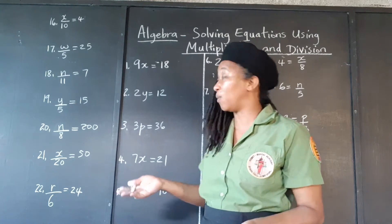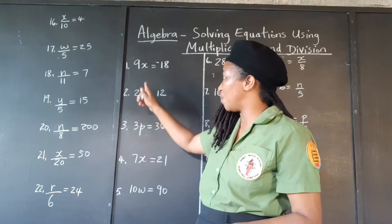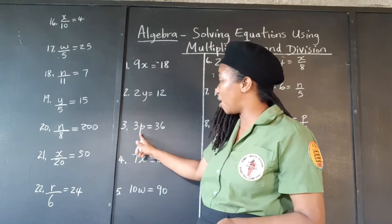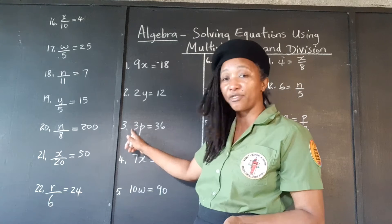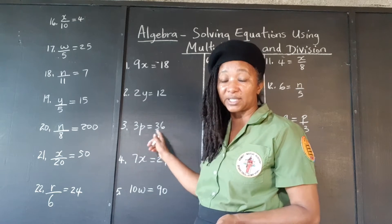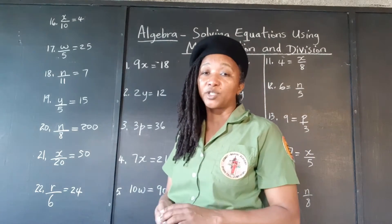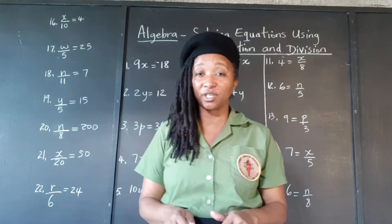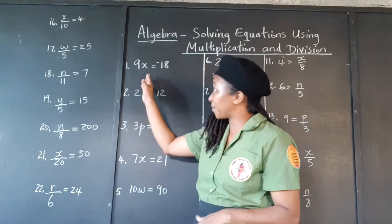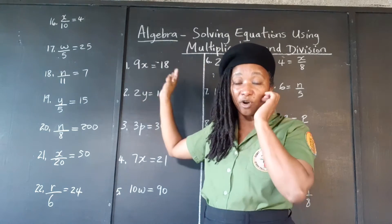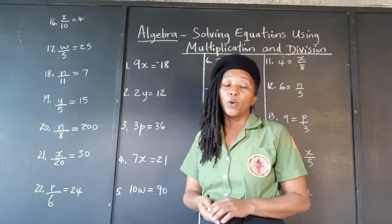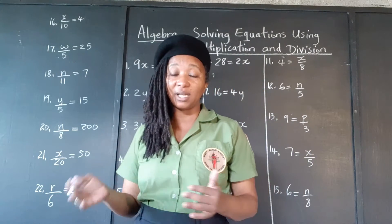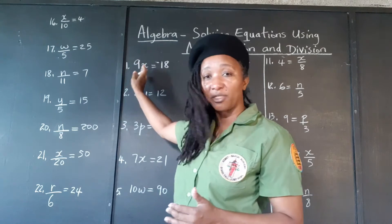What is y? What is x? What is the number which when you multiply 2 by it you get 12? What is the number which when you multiply 3 by that number you get 36? In order to solve these equations, we are going to do the opposite operation of the operation that's being done wherever the variable is, because we want to get the variable by itself, preferably on the left.